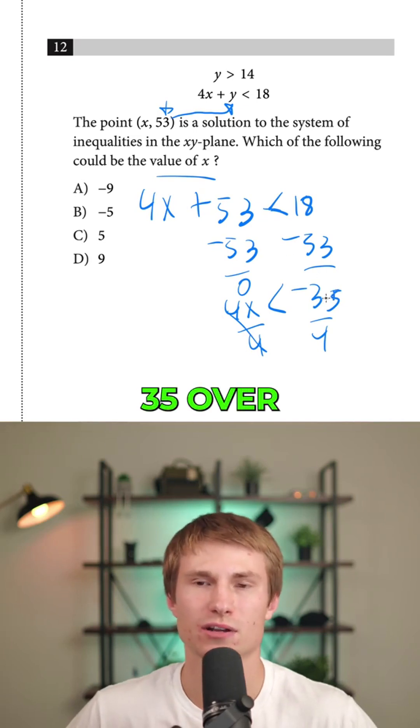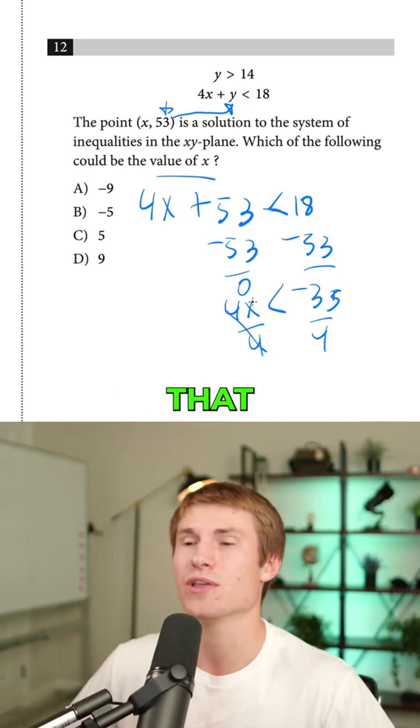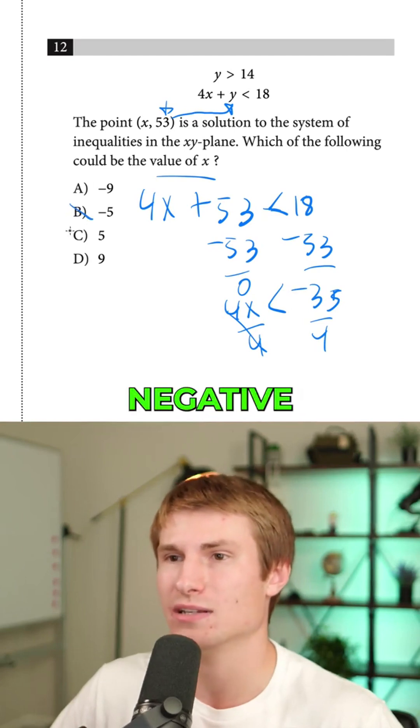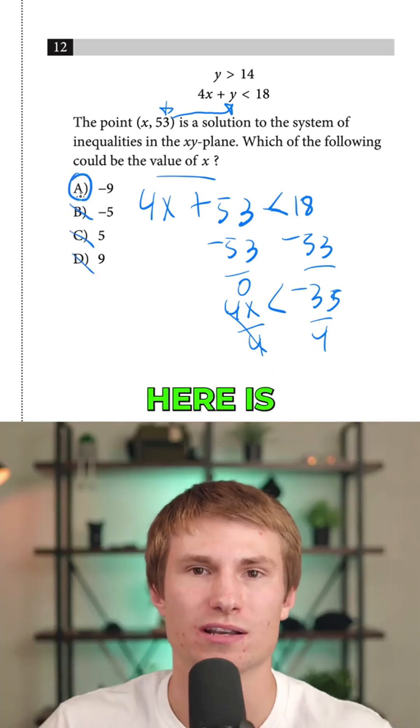Now we see that x must be less than negative 35 over 4. What you should be able to recognize here is that 35 over 4 is pretty close to 36 over 4, or in other words, 9. So we know that x has to be less than negative 35 over 4, which means x cannot be negative 5, 5, or 9 because they do not pass that inequality. The only number that does here is the answer.